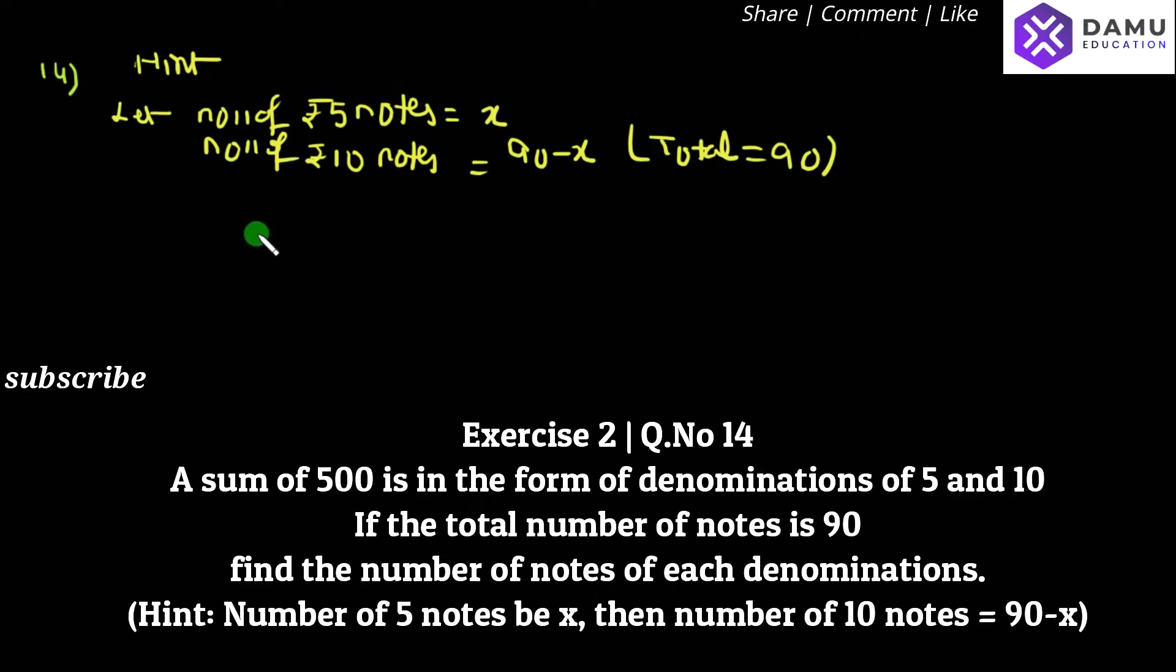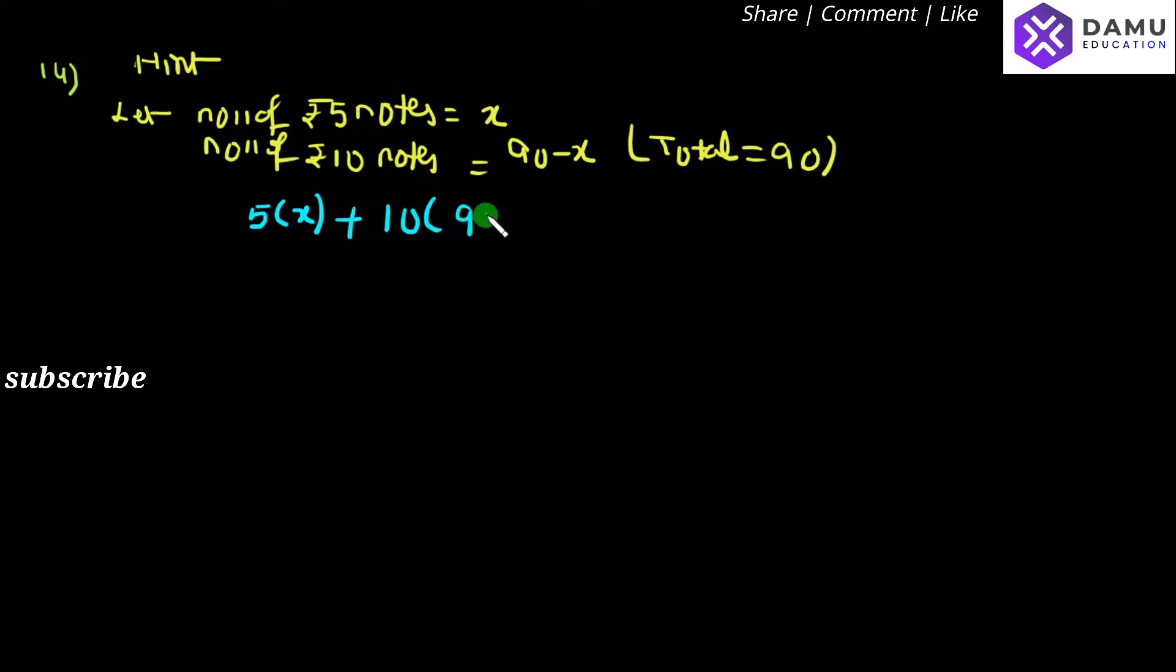So for that, what you can say is each note's value, that is 5 rupees times number of notes, plus 10 rupees times the number of 10 rupee notes which is 90 minus x, will be equal to the total. If you add all that, you will get 500.